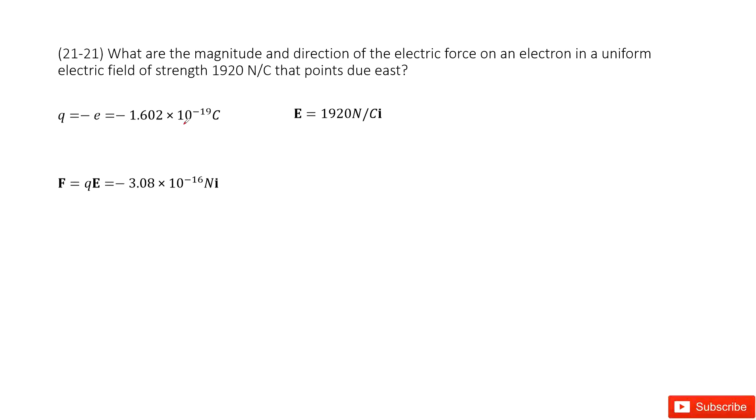We need to find the magnitude and direction for the electric force on an electron. The keywords are electron and electric field. How can we do that? First, we consider the electric force in the electric field. It's just a charge times the electric field.